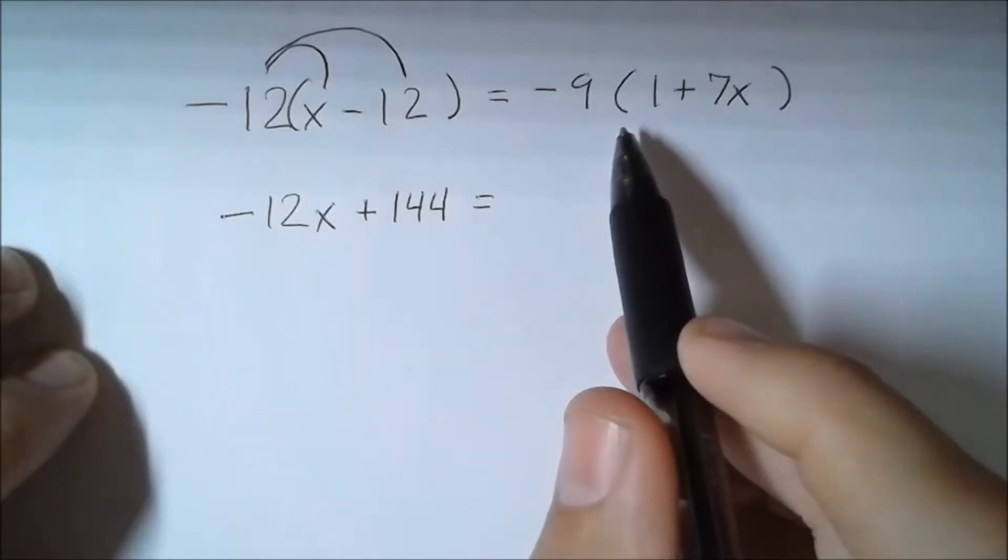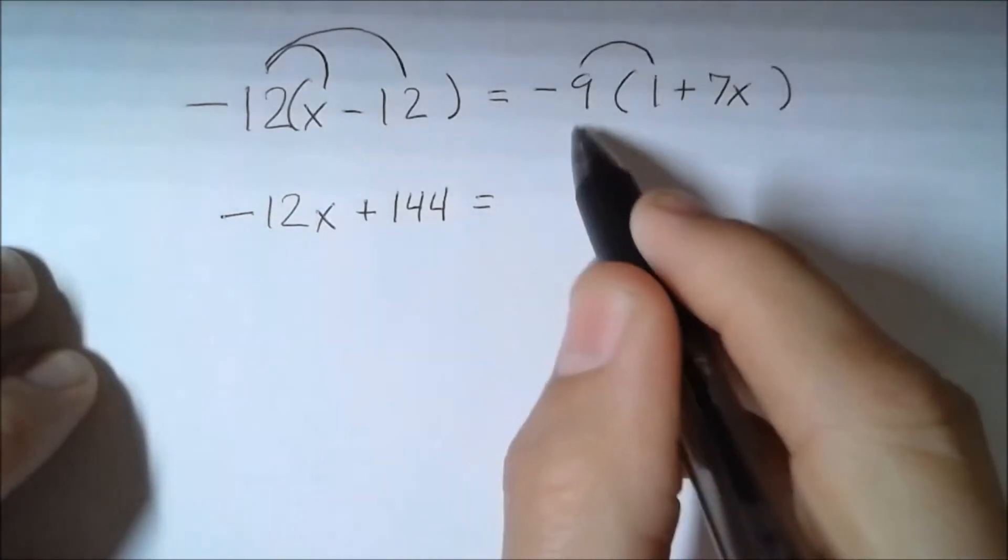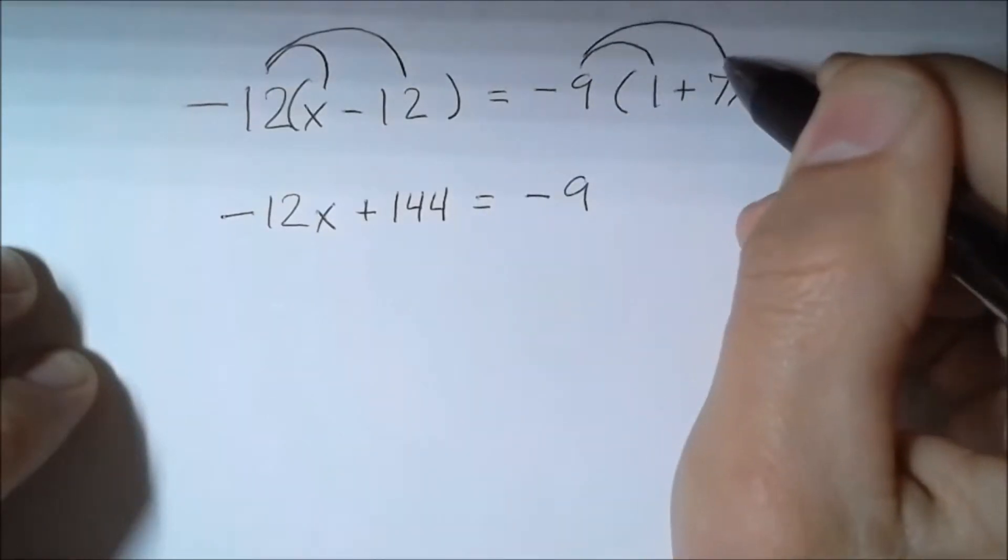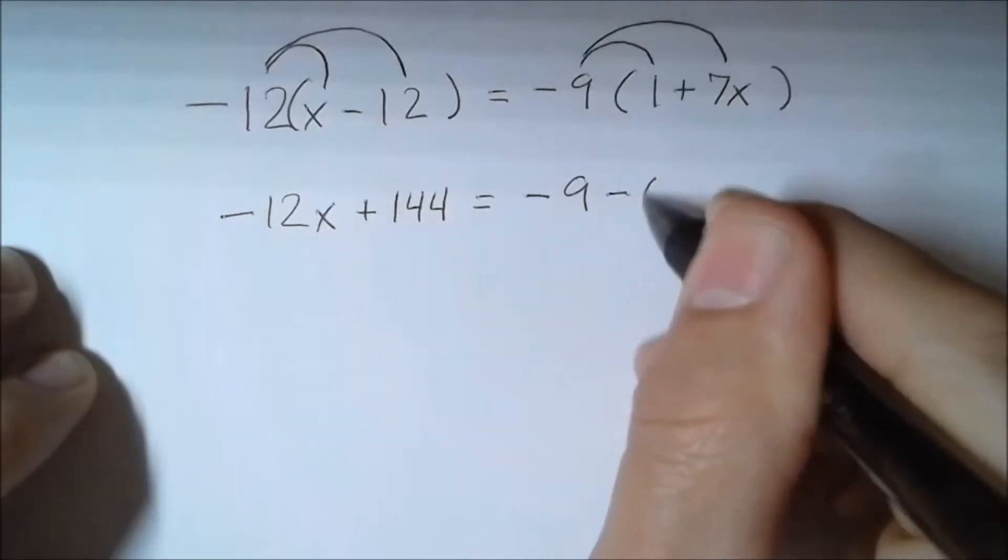Then I want to go to the right side. I'm going to distribute this 9, or I should say negative 9, and that's going to give me negative 9. Then I'm going to distribute it to the 7x, and that's going to give me negative 63x.